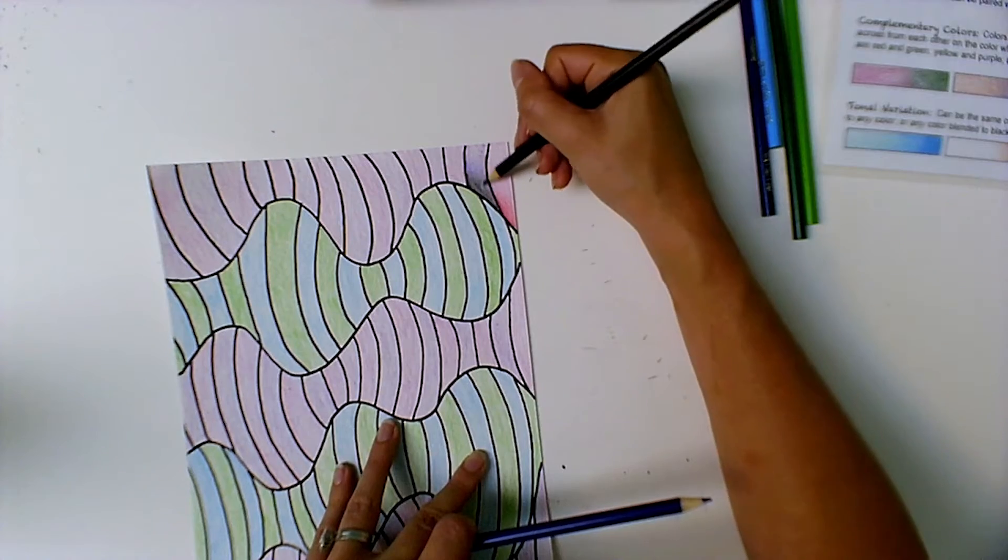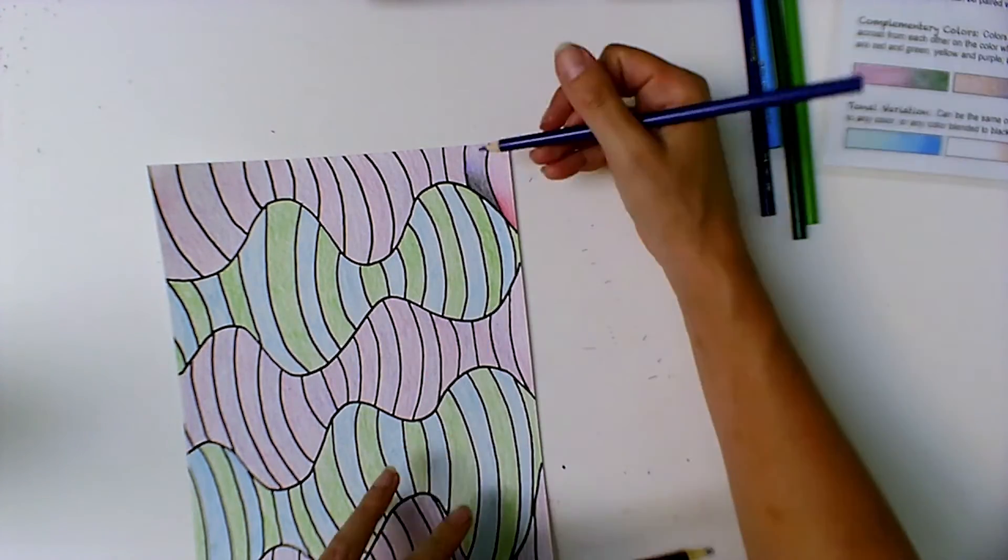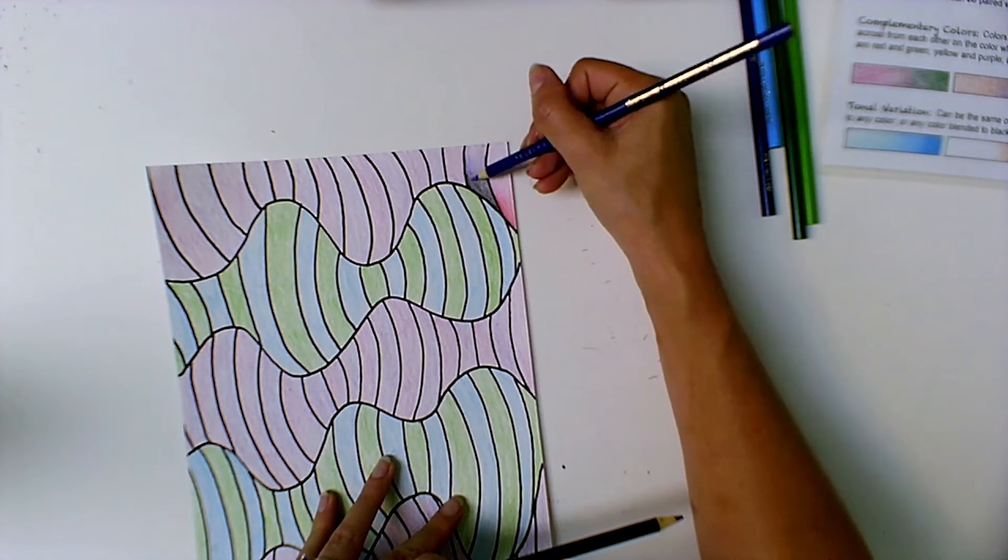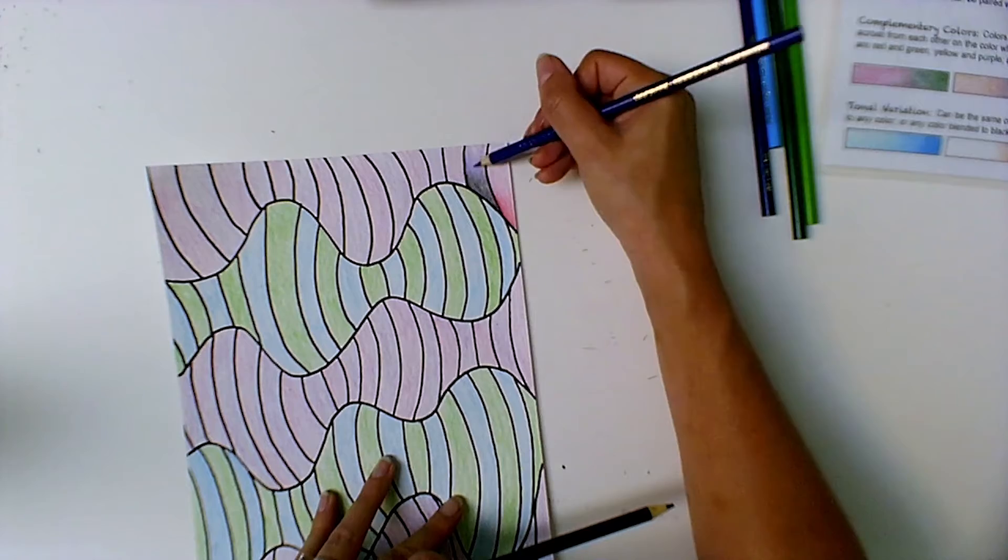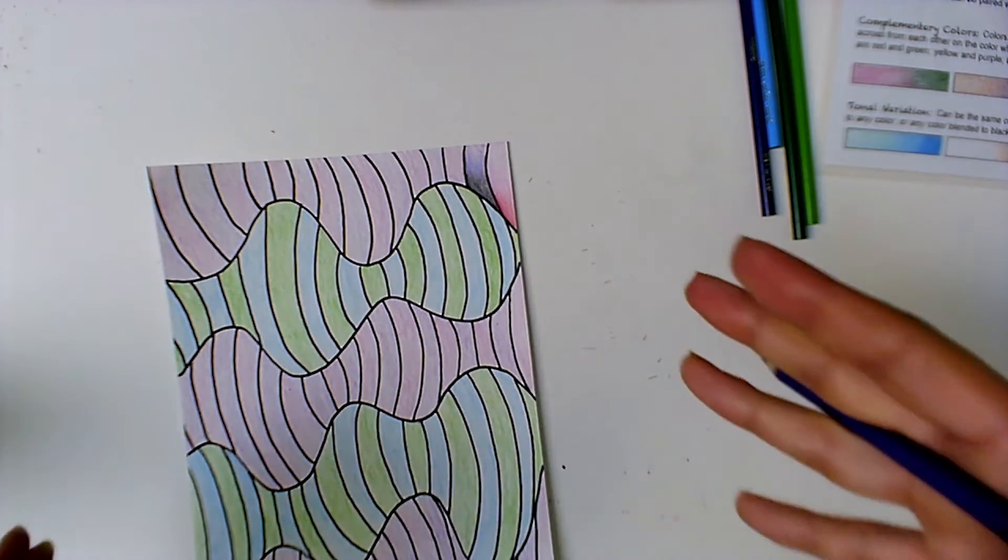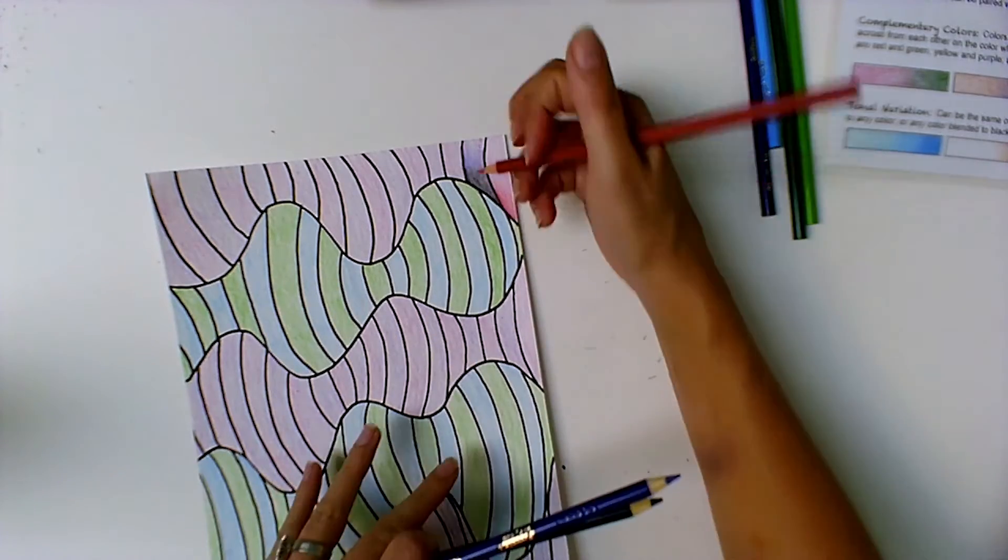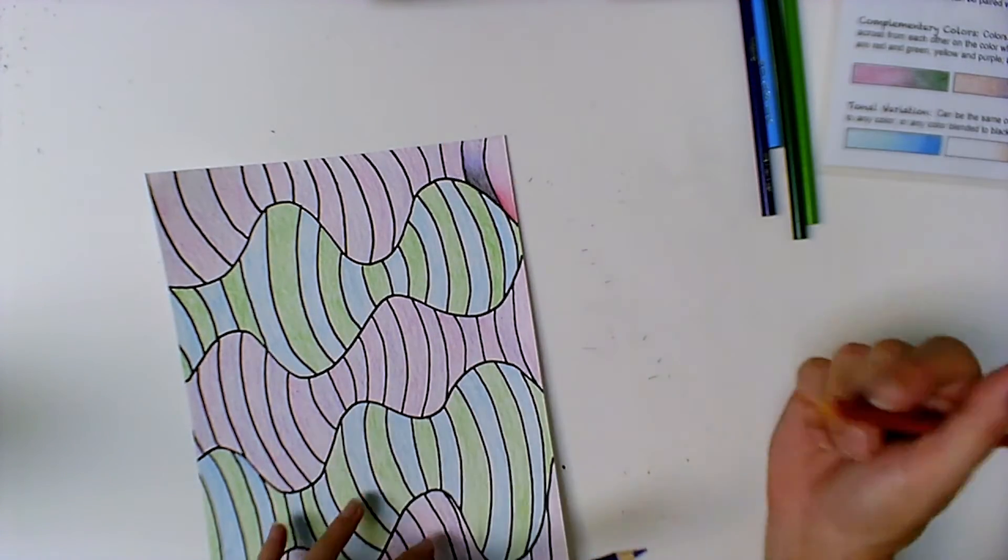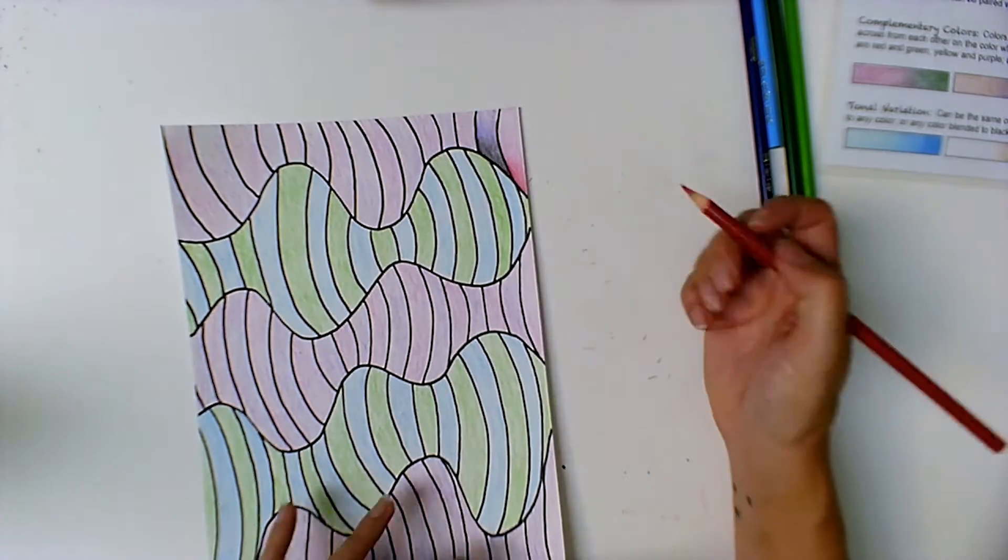Like we talked about in the worksheet, dark colors look further away and the lighter colors will look closer to your eye. So we're darkening up these edges to make it look like they're sinking back into the paper. And then I'll go back to the red and the pink and continue my pattern all the way down.